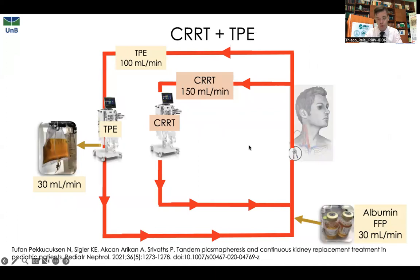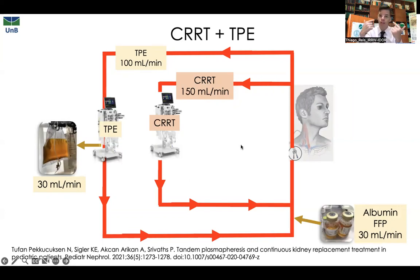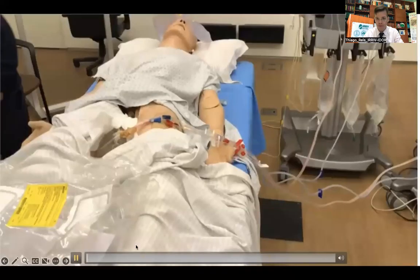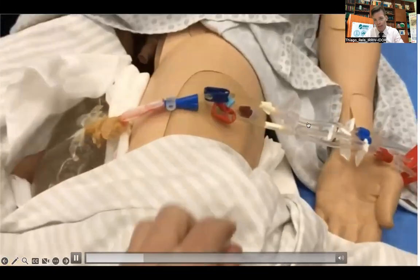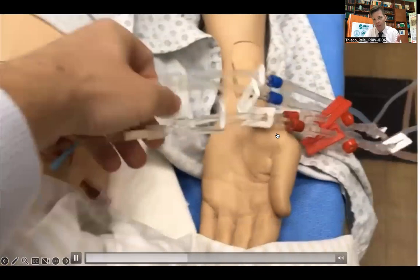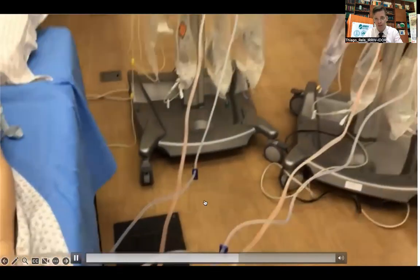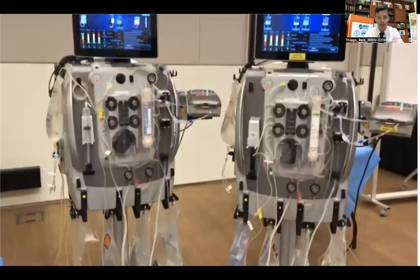It is also possible to apply plasmapheresis in parallel with CRRT. Using a Y-connector on both the inlet and outlet lines of a single catheter, you can run 150 mL/min for the CRRT circuit and 100 mL/min for the TPE circuit simultaneously. This avoids the need for an additional catheter and eliminates the need to stop CRRT to carry out TPE.